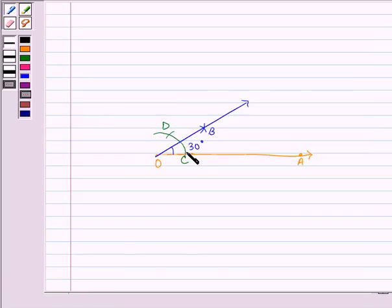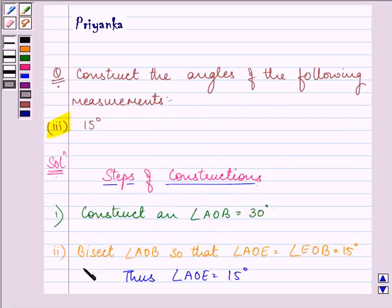Now what we need to do is we need to construct OE that will be the angle bisector of AOB. So bisect angle AOB so that the two angles that you have made becomes equal to 15 degrees, because half of 30 degrees is 15 degrees itself.